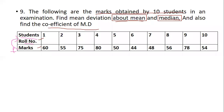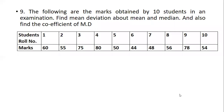Please do not confuse this problem to be a discrete series problem — this is an individual series problem. In this problem they are asking us to find mean deviation about mean as well as mean deviation about median, and we are also supposed to find the coefficient of mean deviation. That is the complete problem, so let's go on and solve it.